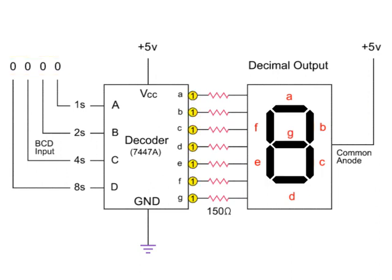If you want to display a one, the binary sequence would be zero, zero, zero, one. This input combination will cause outputs B and C to drop to low, thus causing segments B and C to activate and display.